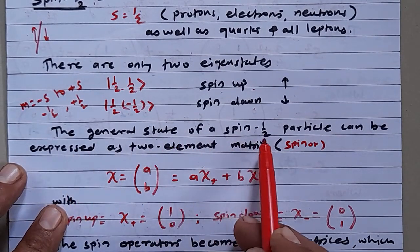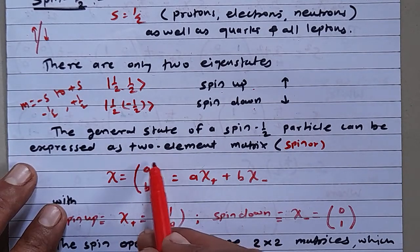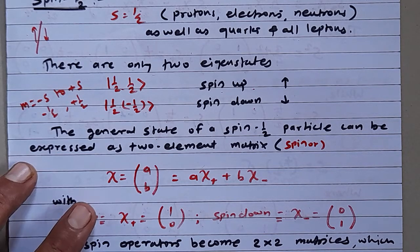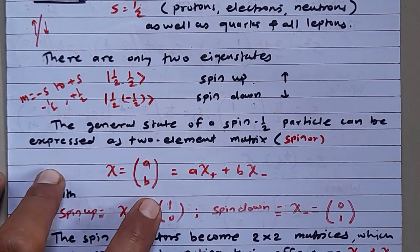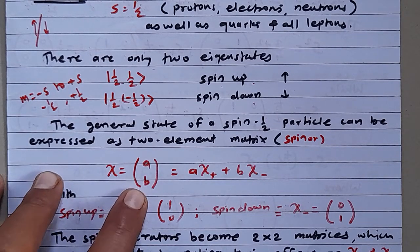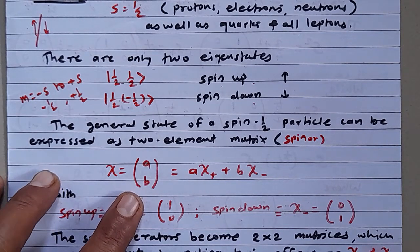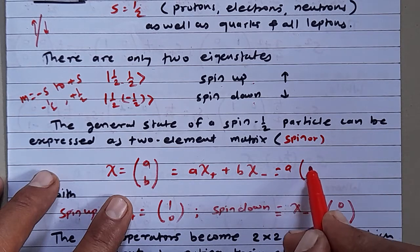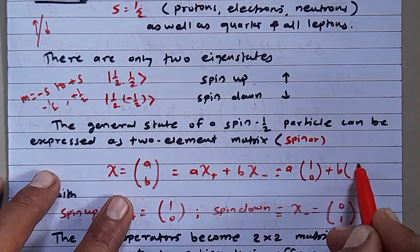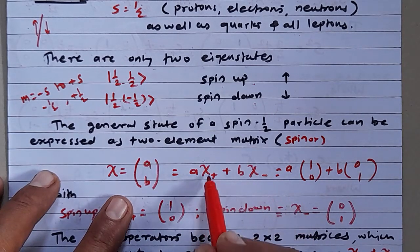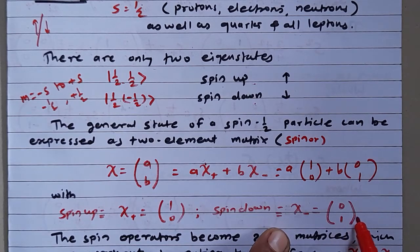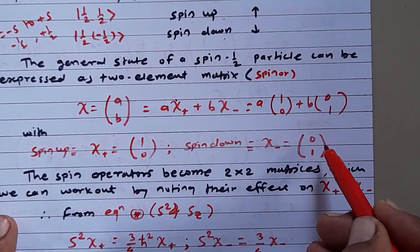The general state of the spin-half particle is expressed as a two-element matrix, also known as a spinor, represented as χ = (A, B), where A and B are arbitrary constants that can be real or complex. We can write this as A·(1,0) + B·(0,1). We define χ-plus as the spin-up particle and χ-minus as the spin-down particle.